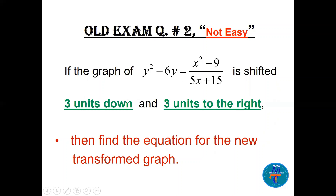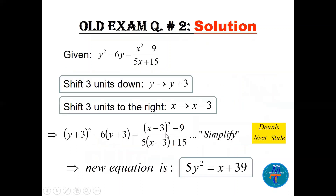Question two: the graph of this equation is shifted three units down and three units to the right. Find the new equation. We know that shifting three units down means y is replaced by y + 3, and shifting three units to the right means x is replaced by x − 3. We replace every x with (x − 3) and every y with (y + 3), simplify, and we get 5y² = x + 39.